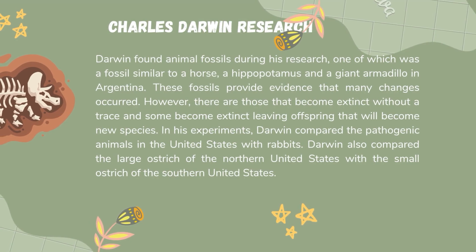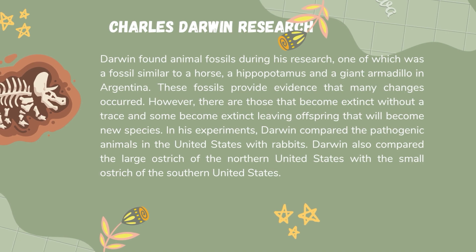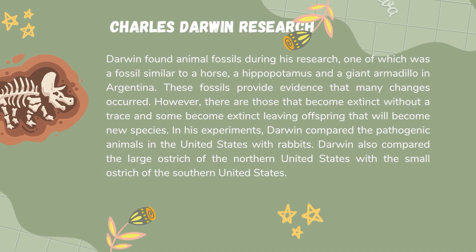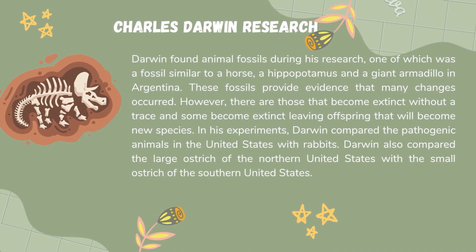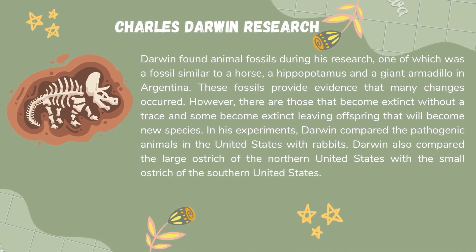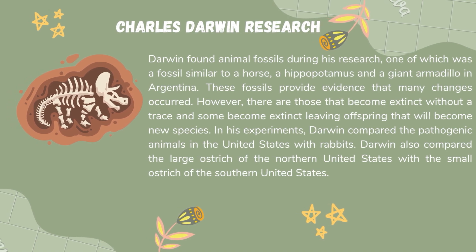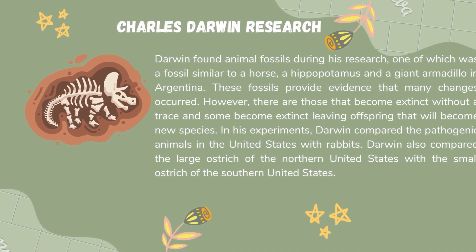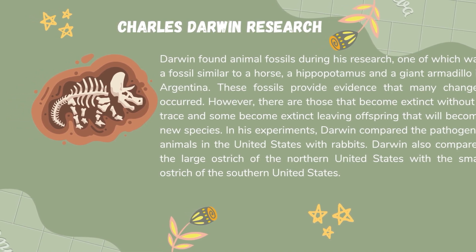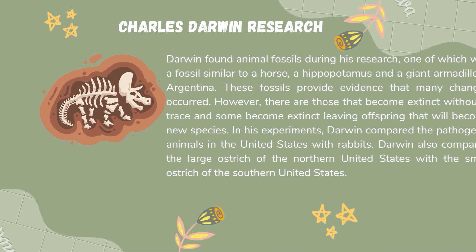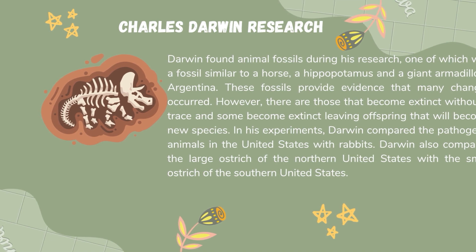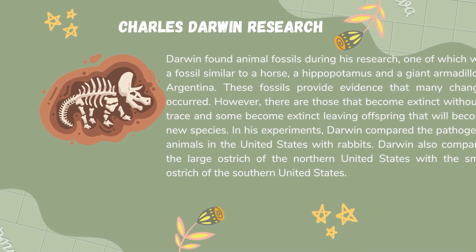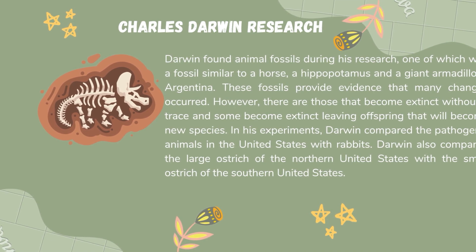Darwin found animal fossils during his research, one of which was a fossil similar to a horse, a hippopotamus, and a giant armadillo in Argentina. This fossil provides evidence that many changes occur. However, there are those that become extinct without a trace and some become extinct leaving offspring that will become new species.